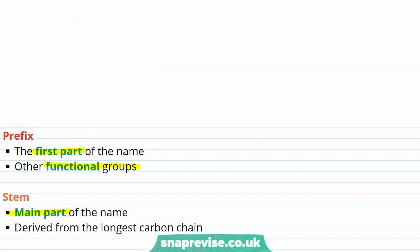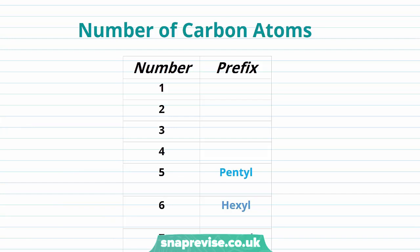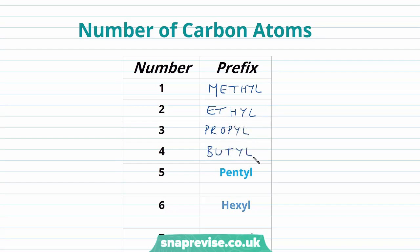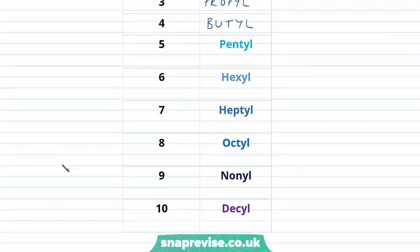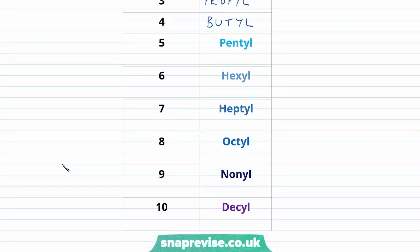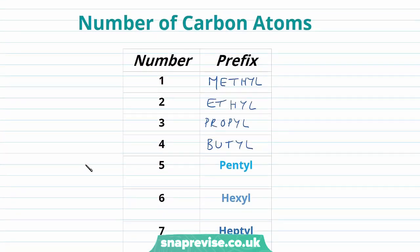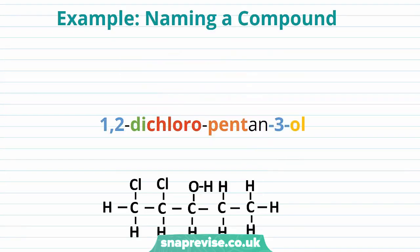So let's take a look at how we name the number of carbons in our compounds. When we have one carbon the prefix is 'meth', two is 'eth', three is 'prop', four is 'but', five is 'pent', six is 'hex', seven is 'hept', eight is 'oct', nine is 'non', and ten is 'dec'. This code for the number of carbons isn't difficult to learn, but it's incredibly important that you know it — we need to be able to decode the name of our compounds or give unknown compounds a name.